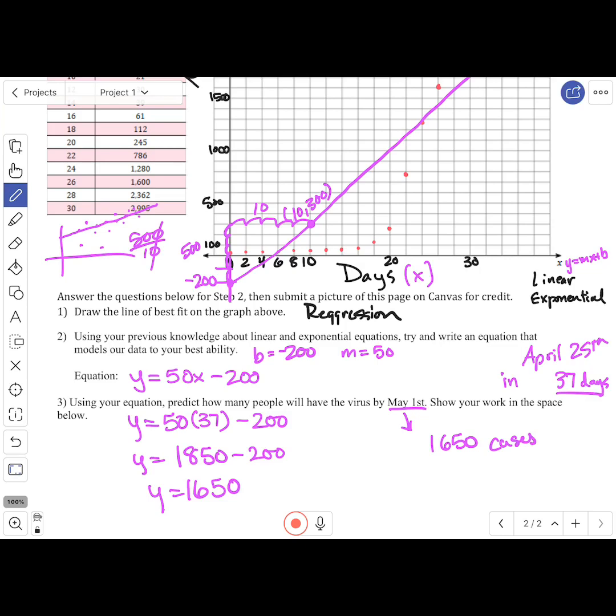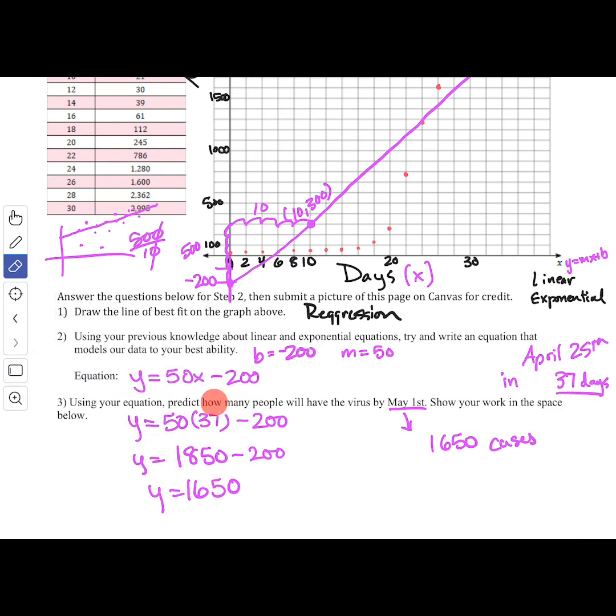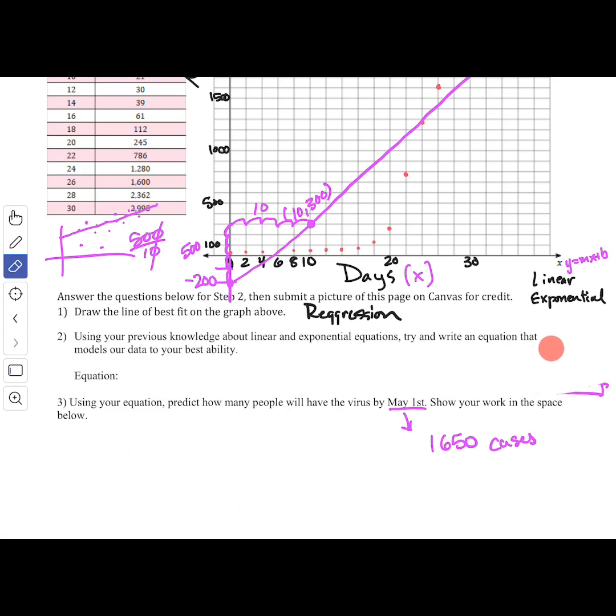What I'm predicting is by May 1st, we will have 1,650 cases of coronavirus here in Utah. If I'm the governor, I'm going to use that to make some policy choices. What does that mean? Is that not bad? Is that pretty good? Now, we should notice that there's an issue with this.